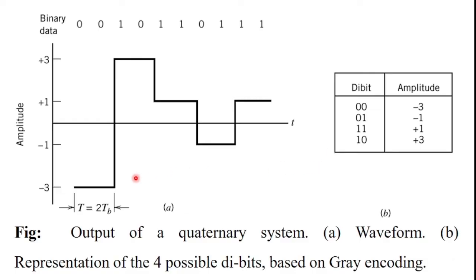Pulse duration of binary PAM system is denoted by T_b. In case of M-ary PAM transmission system, the pulse duration is denoted as T equals 2T_b.